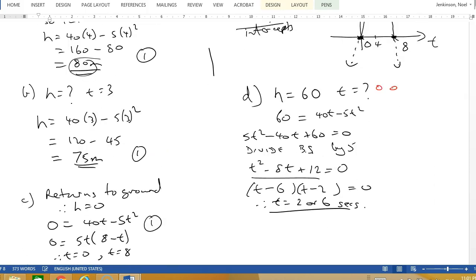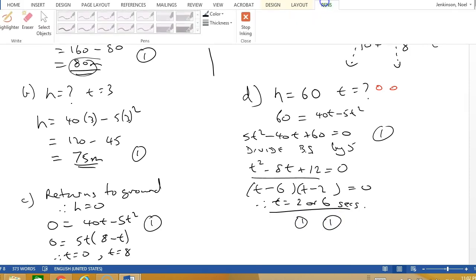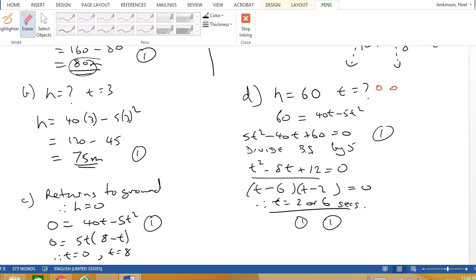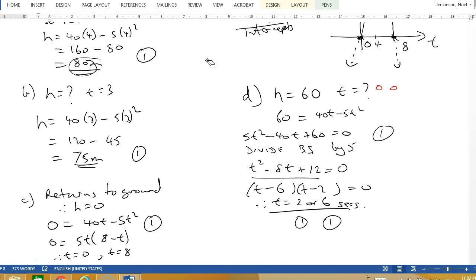And then for part D, with a height of 60 what's the time, there would be one for turning it into an equation, then one for the 2 and one for the 6. And that's the 6 marks for the question. So that is solving quadratic modeling type problems or word type problems. That concludes question 14.